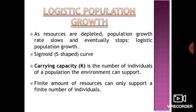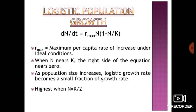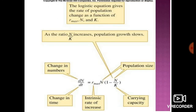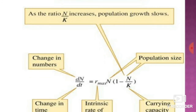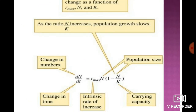Let's examine the meaning of each term in the formula. Dn/dt means the rate of change of population number over time, where 'd' means change and 'dt' means change in time.